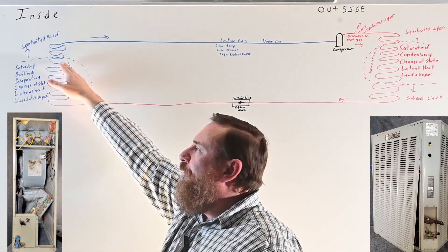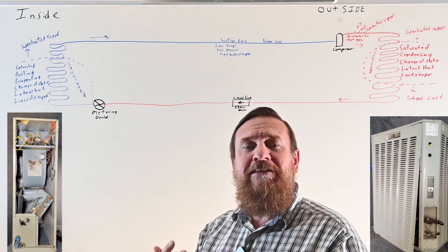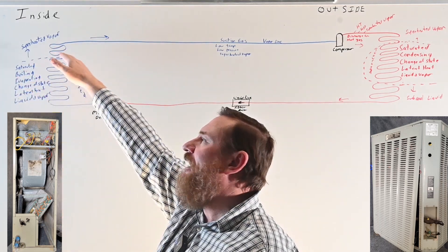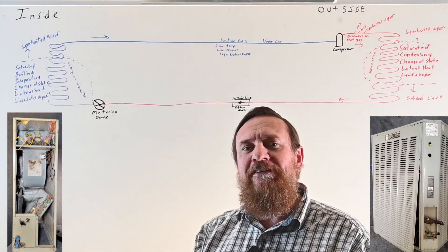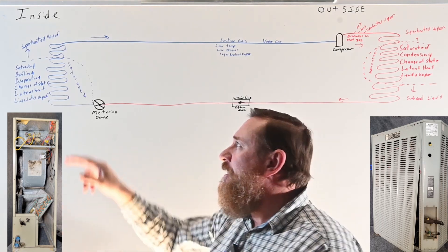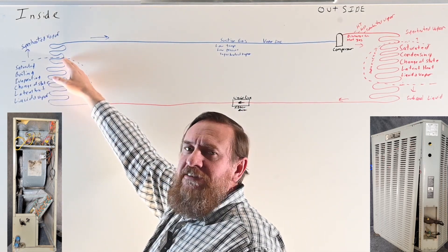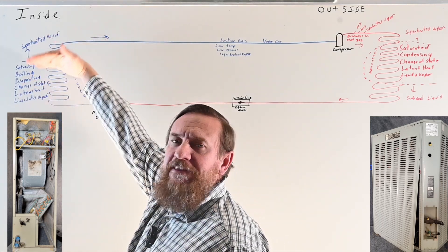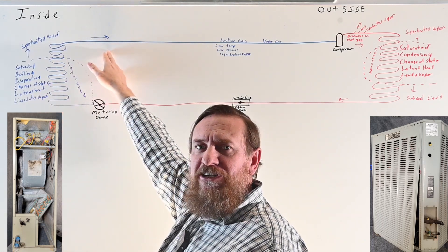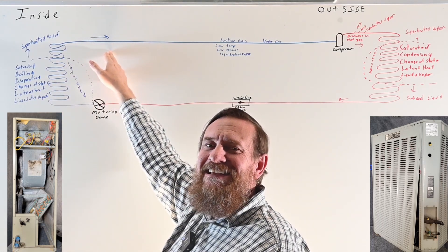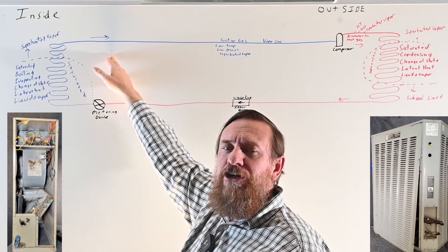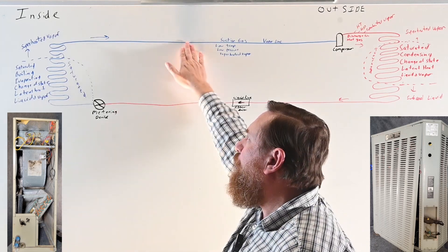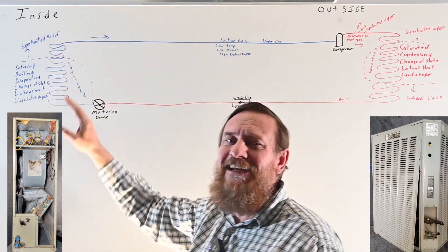After all the refrigerant boils from liquid to vapor through most of the evaporator coil, it's still only 40 degrees. We can still absorb heat — the 75-degree air goes to that 40-degree vapor. The difference is now the vapor starts superheating, sensible heat, rising from 41, 42, 43 degrees and so on, superheating above the saturation point. So in the suction gas line, we have a low temperature, low pressure, superheated vapor — it feels cool to you but it is superheated above its saturation point.